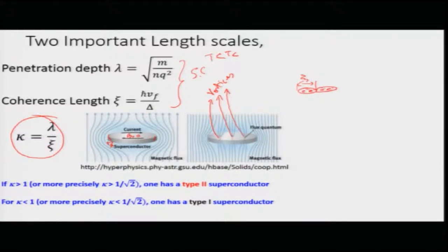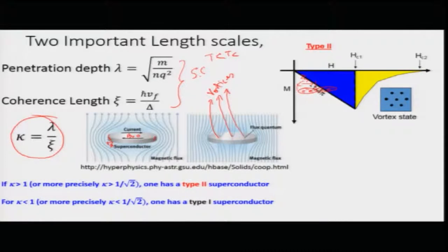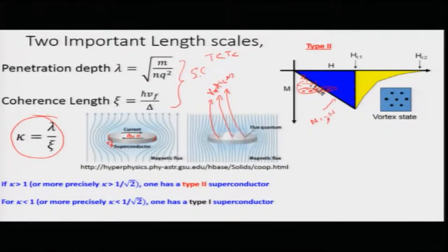Kappa is the ratio of lambda to xi. It was shown that if kappa is greater than 1, or more precisely greater than 1 by root 2, then one has Type 2 superconductors. Up to a lower critical field Hc1, you have the Meissner state — the magnetic field is completely shielded from the interior of the sample. Magnetization is minus H, so the slope is minus 1, and for fields above Hc1 the diamagnetism decreases very slowly.